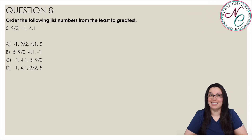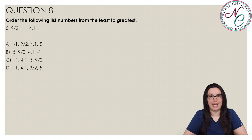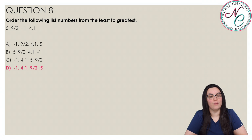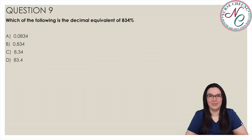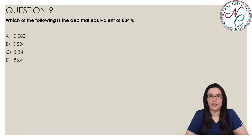Order the following list of numbers from least to greatest: 5, 9 over 2, negative 1, 4.1. Is the correct answer A, B, C, or D? The correct answer is D: negative 1, 4.1, 9 over 2, 5. To convert the fraction, 9 over 2 is equivalent to 4.5 since 9 divided by 2 equals 4.5. So the numbers in order from least to greatest are negative 1, 4.1, 9 over 2, and 5.